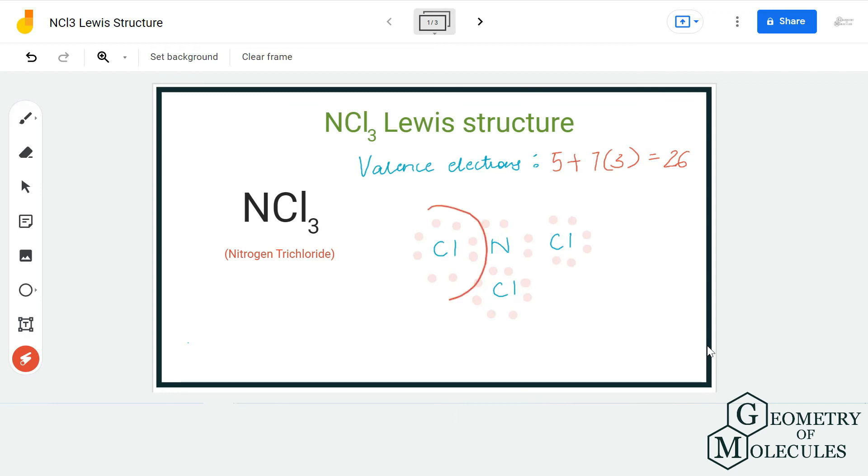And as a result, all these atoms in this molecule have complete octets. And hence, this is the Lewis structure of NCl3, in which nitrogen forms three single bonds with three chlorine atoms. I hope this video helps you to understand that.